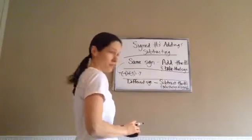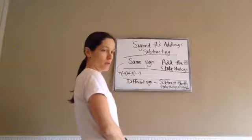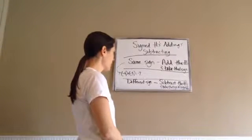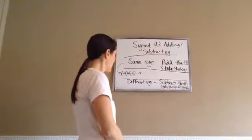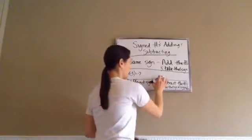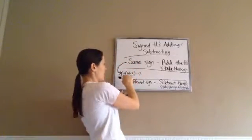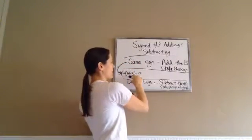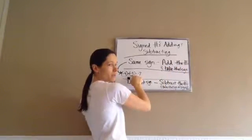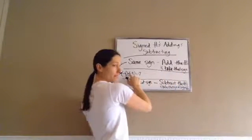Now let's do one of these problems. So this one was the same sign: negative 4 plus a negative 3 made us add the numbers, 4 and 3. 4 plus 3 is 7, and then take that sign — negative number. This one: different sign. I'm going to use the same numbers, 4 and 3. Negative 4 plus a positive 3.